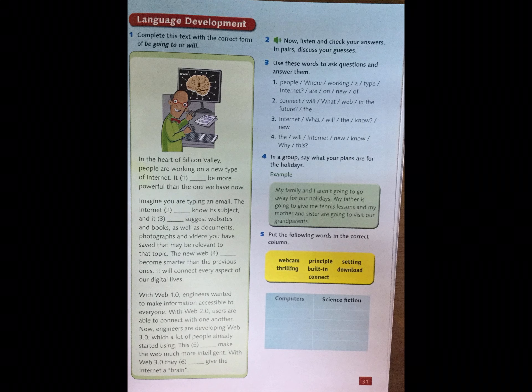So don't forget: 'be going to' is for future planning and 'will' plus infinitive is for predictions. In the heart of Silicon Valley, people are working on a new type of internet.